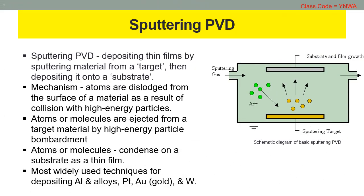We go to another PVD technique, that is sputtering PVD. Sputtering deposition is a PVD method of depositing thin films by sputtering material from a target, then depositing it onto a substrate.